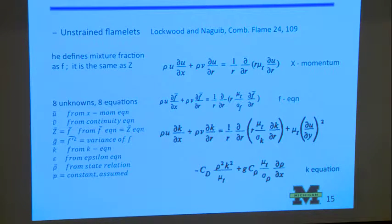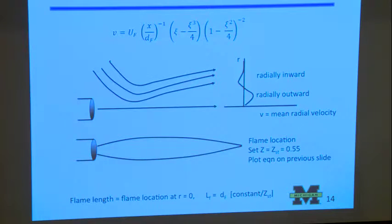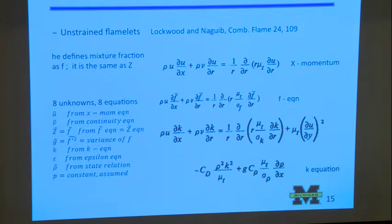The flame location and length is proportional to D sub f divided by stoichiometric mixture fraction. This very nicely agrees with experiment. So why do we even model these flames? It has assumptions and this whole analysis only applies to the most simple problem - the jet. It's not a robust method.